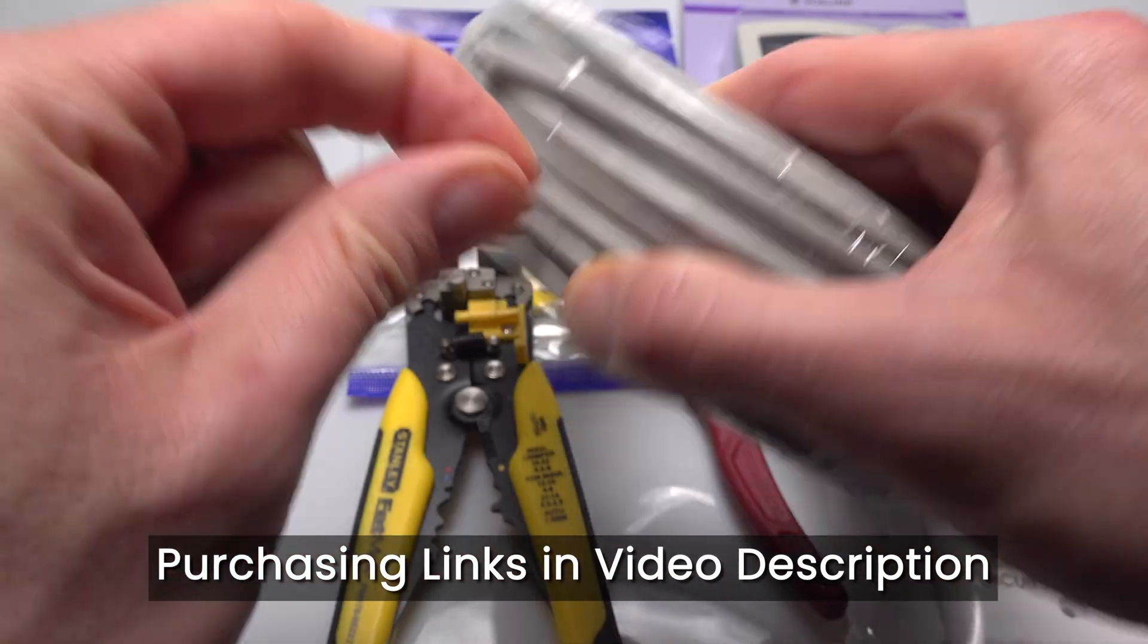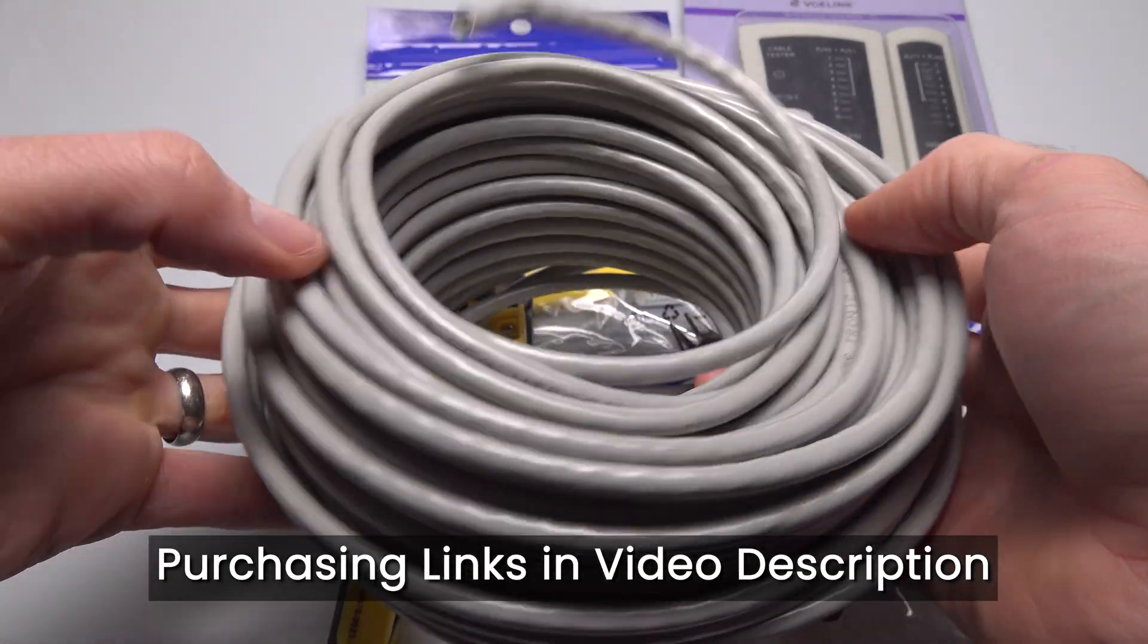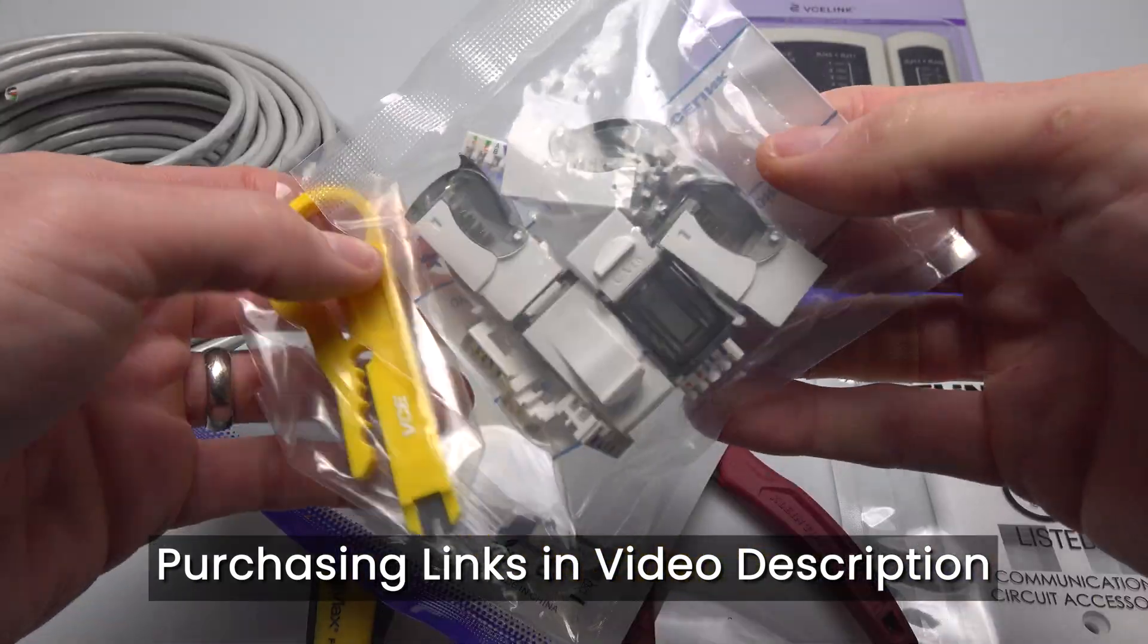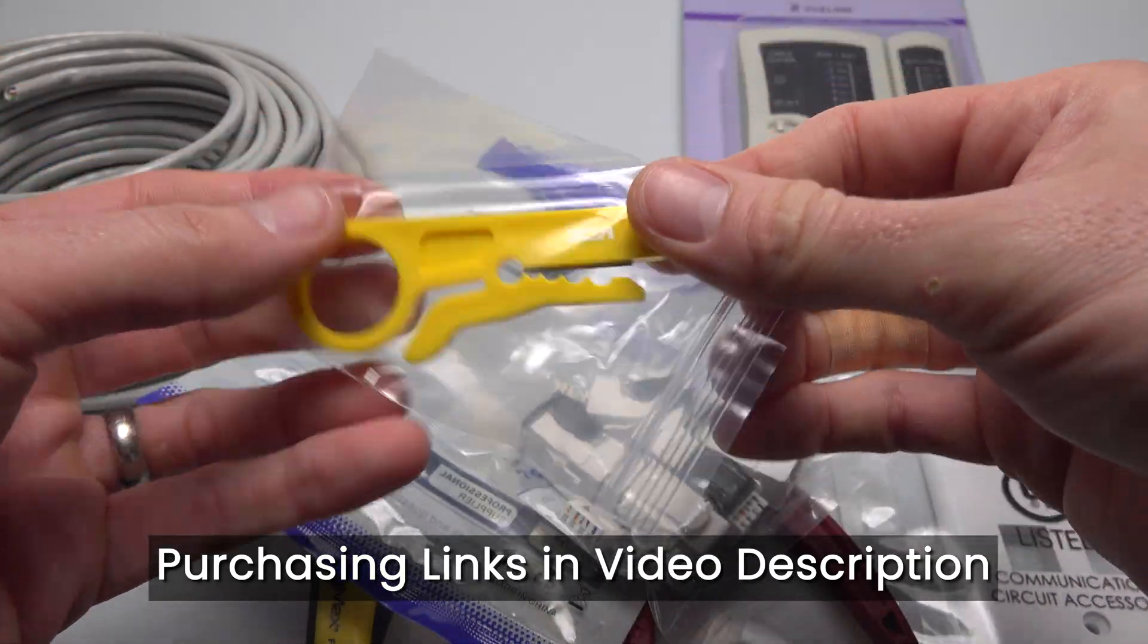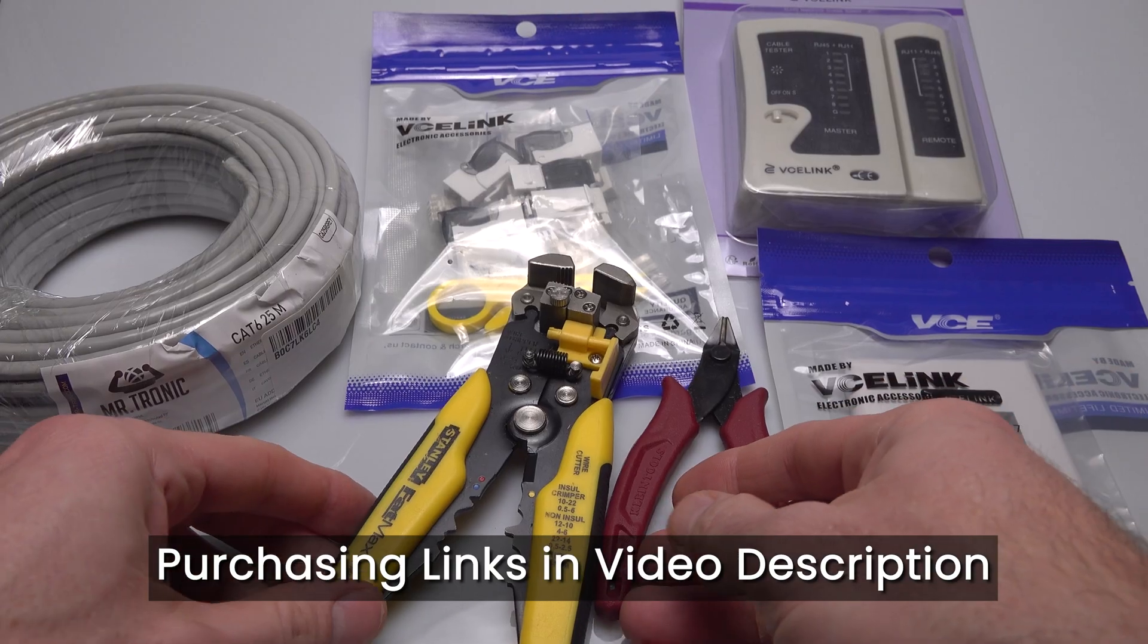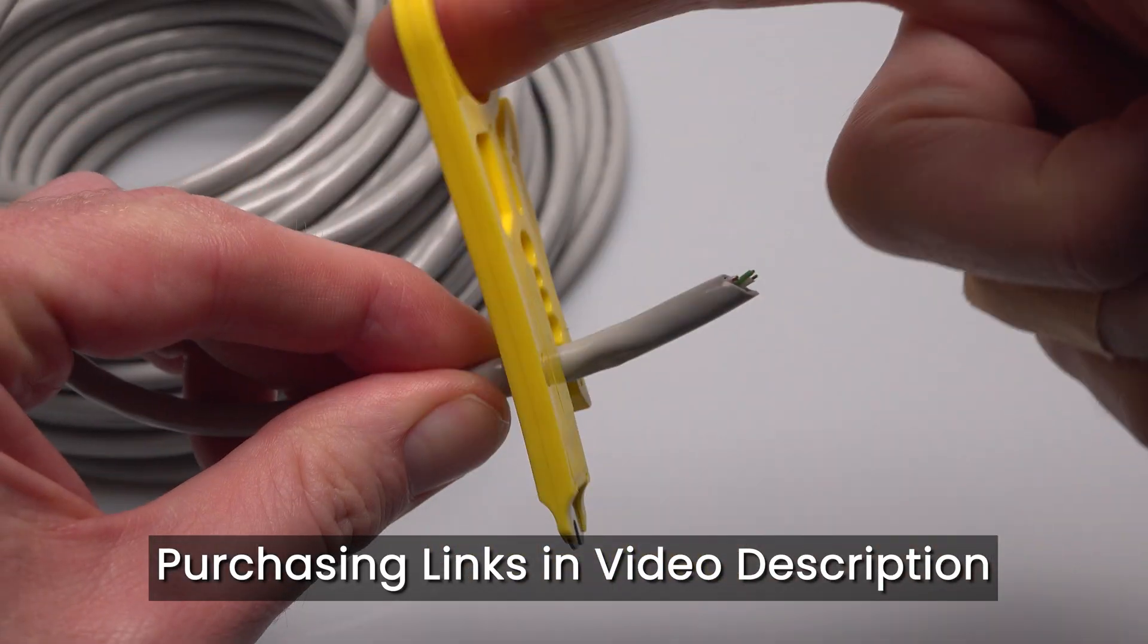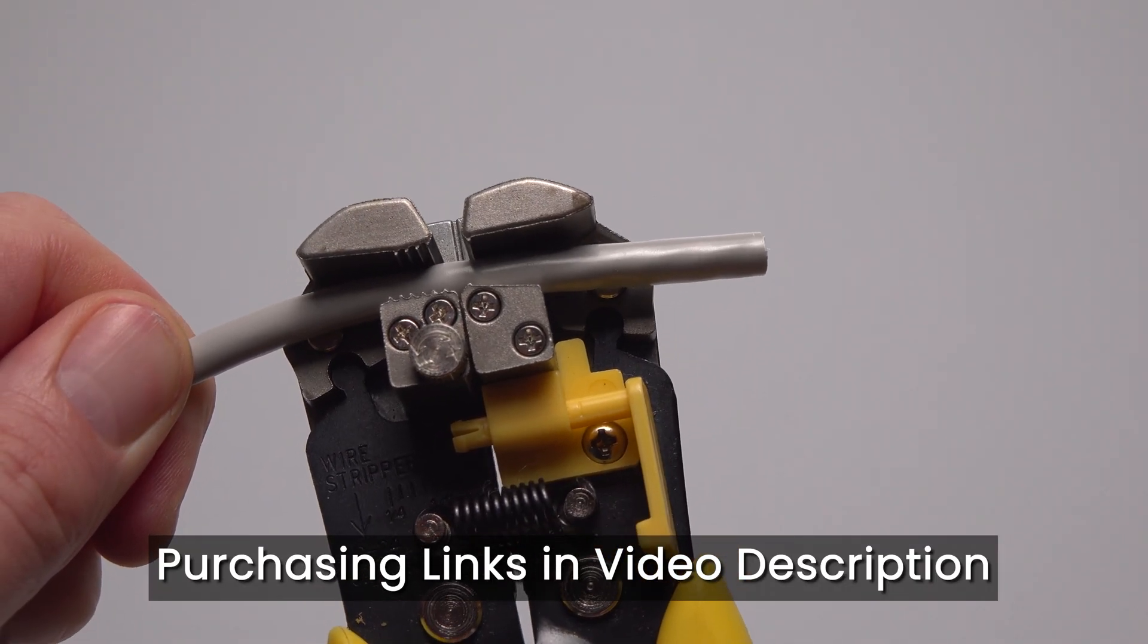So to get started, you'll just need a length of network cable for your cable run, the tool-free keystone jacks themselves, a pair of wire strippers. There's one included in this packet, but if yours doesn't come with one, then I'd recommend a pair of automatic wire strippers like these, as they're generally better and you're less likely to damage the wires inside when stripping off the outer jacket.